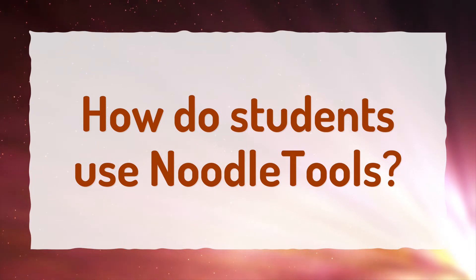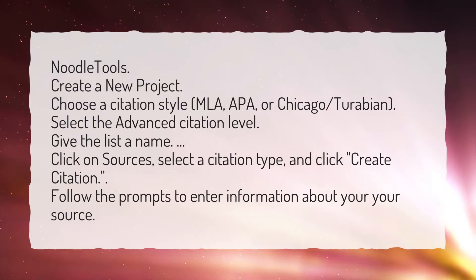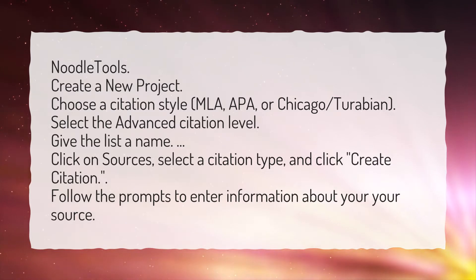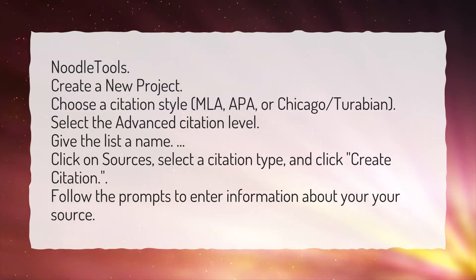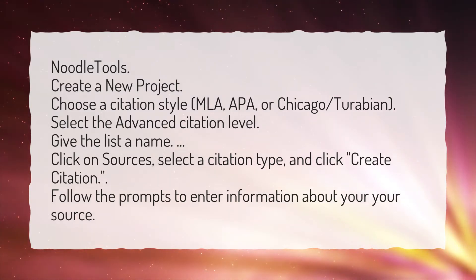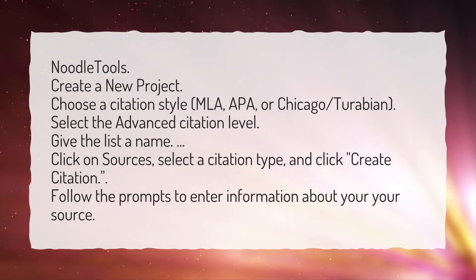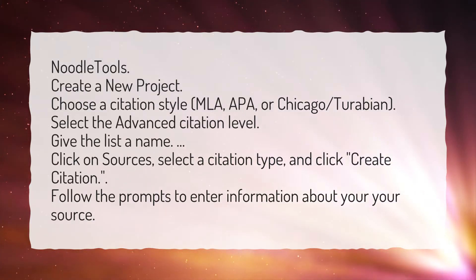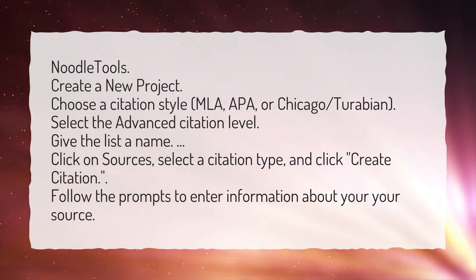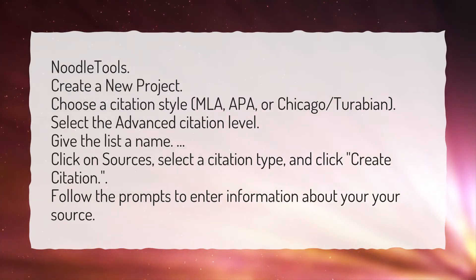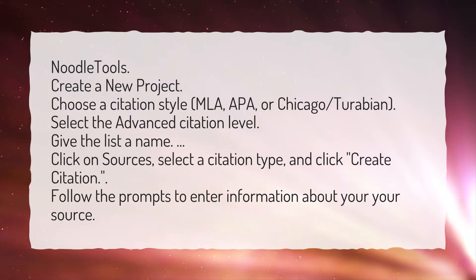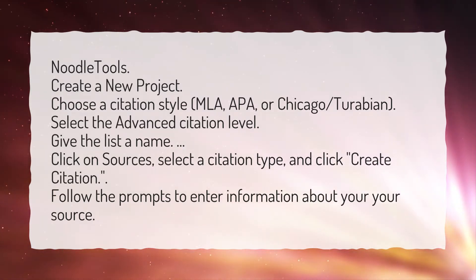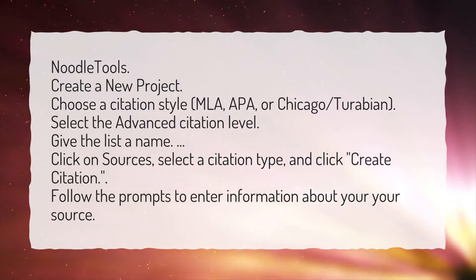How do students use NoodleTools? Create a new project. Choose a citation style — MLA, APA, or Chicago/Turabian. Select the Advanced Citation level. Give the list a name. Click on Sources, select a citation type, and click Create Citation. Follow the prompts to enter information about your source.